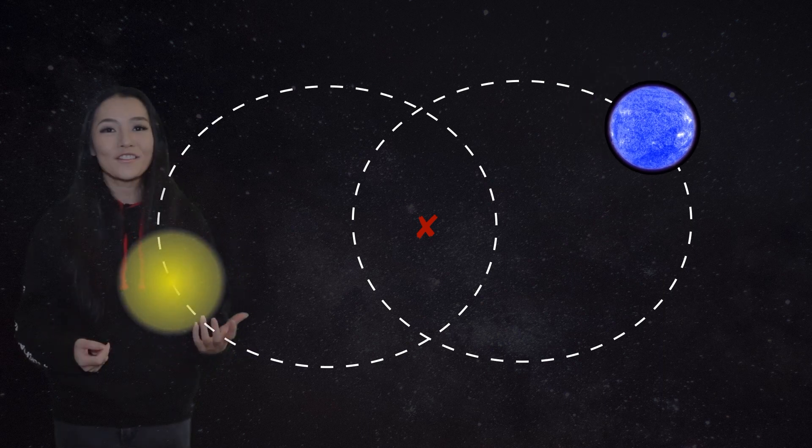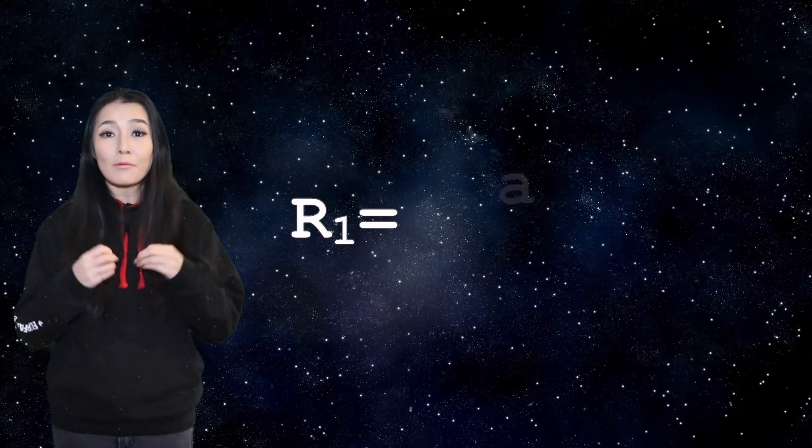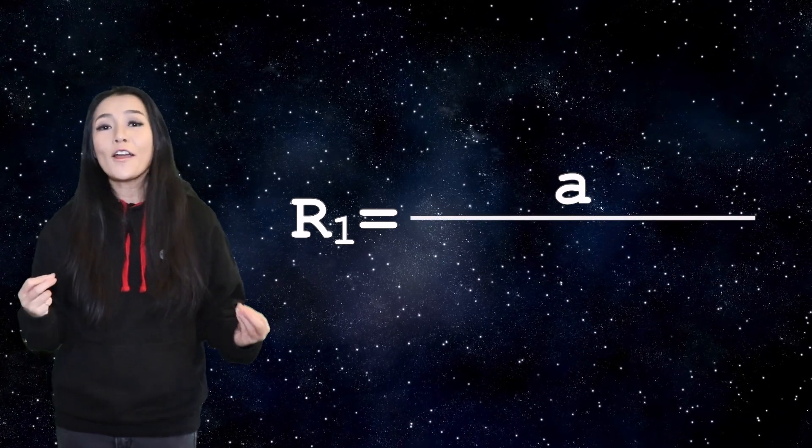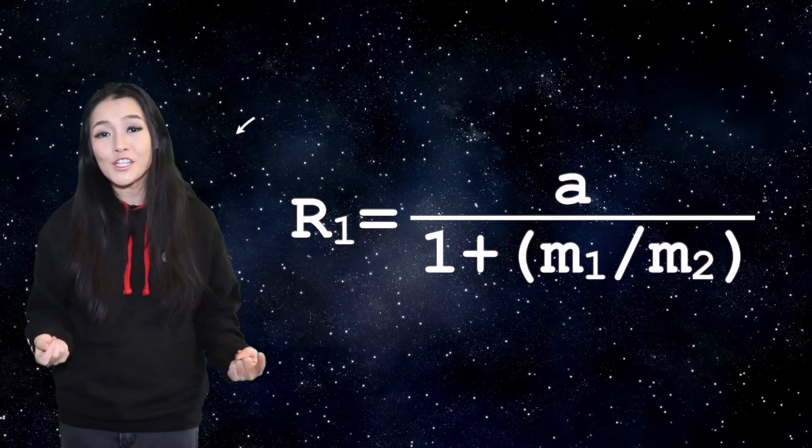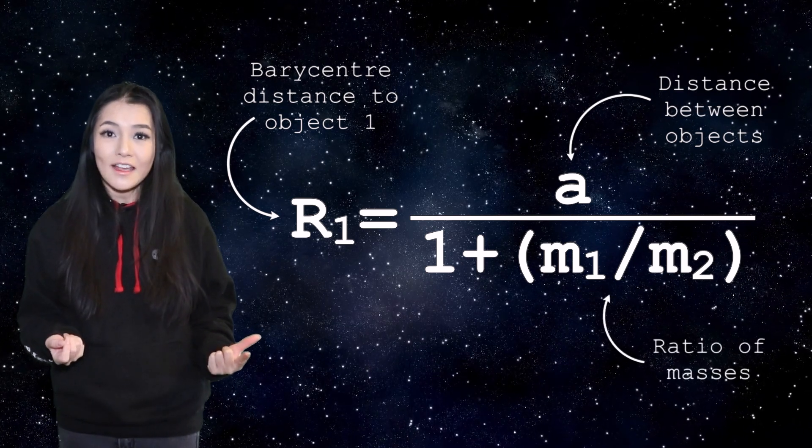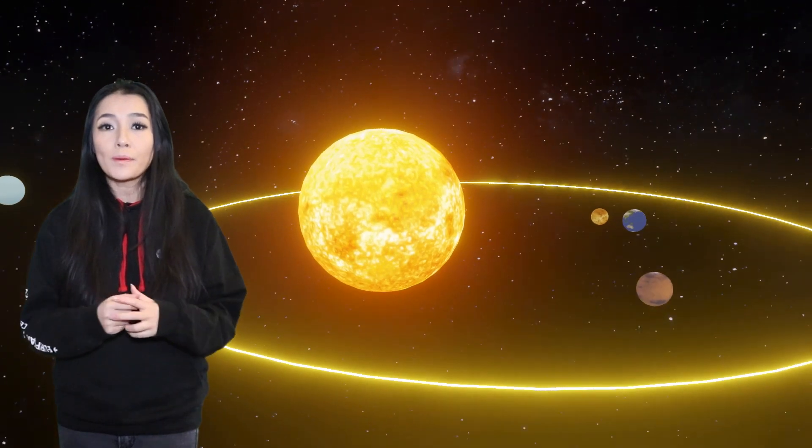It's given as the distance to object one is equal to the distance separating the two objects divided by one plus the ratio of the masses of the two objects. So for very big masses of object two and very large separations between the two objects then the barycenter, the distance from object one, will be very large.